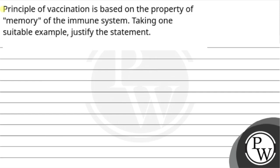Hello, children. Let's read the question. Principle of vaccination is based on the property of memory of the immune system. Taking one suitable example, justify the statement.